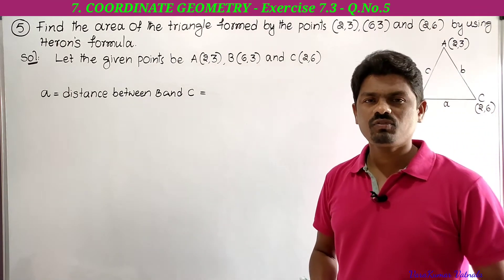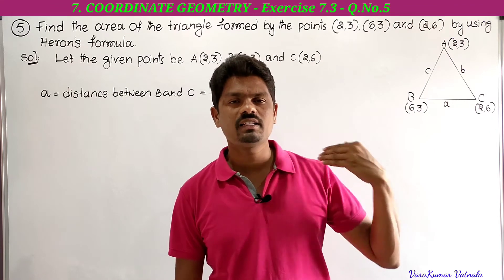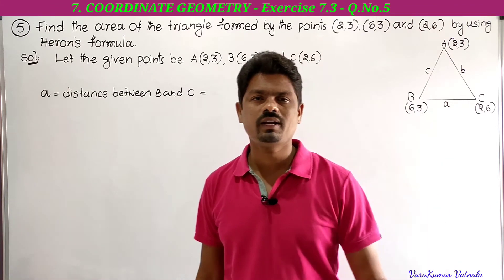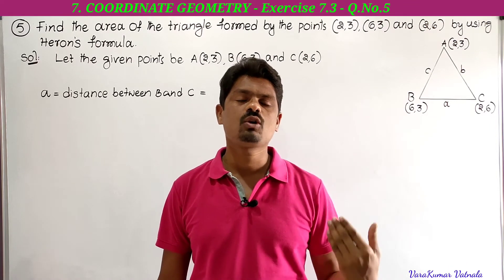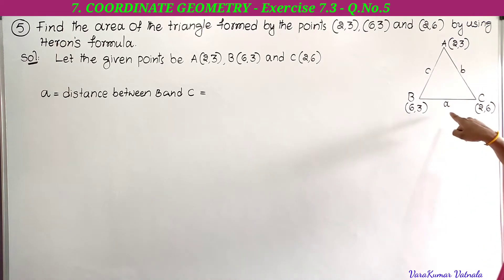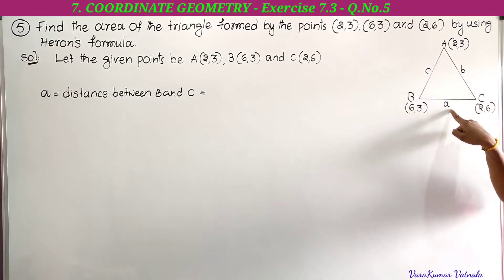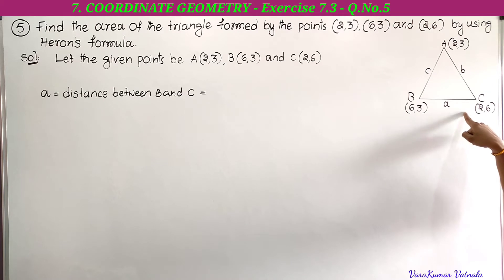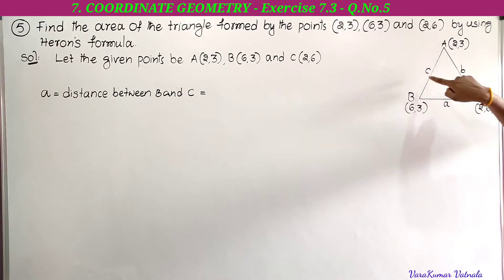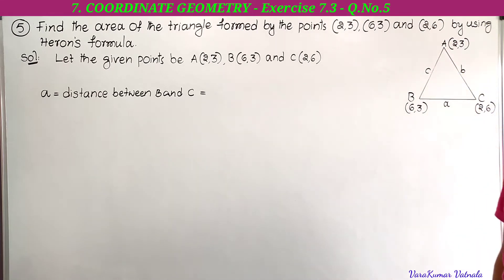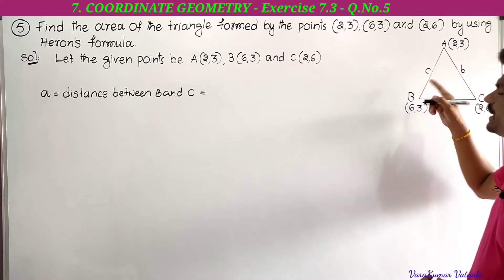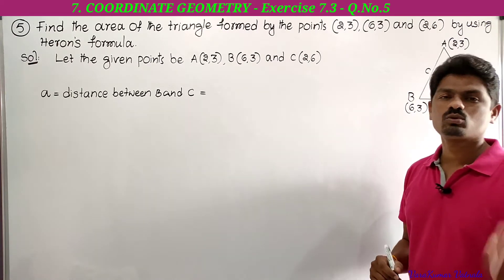Heron's formula: area of the triangle equals square root of s(s−a)(s−b)(s−c), where s = (a+b+c)/2. Here, a is the distance between B and C, b is the distance between A and C, and c is the distance between A and B. We use the distance formula to find a, b, c.